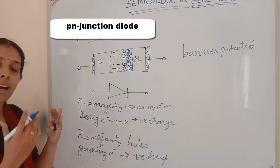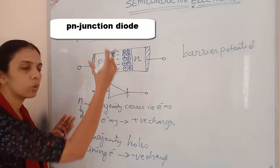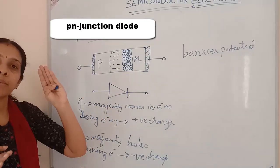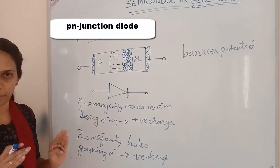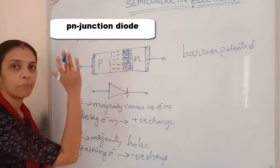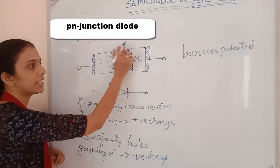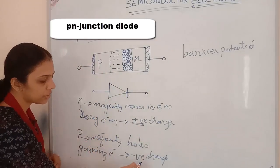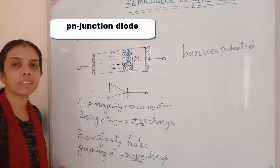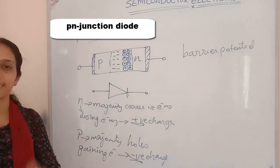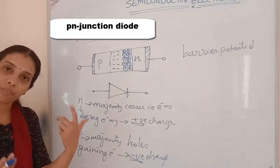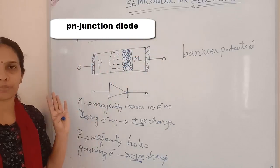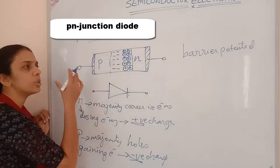Because of this barrier potential, once the positive and negative charges become equal, the system reaches equilibrium and no more transfer of electrons or holes occurs. This region is called the depletion region. The potential barrier at equilibrium is called the barrier potential.